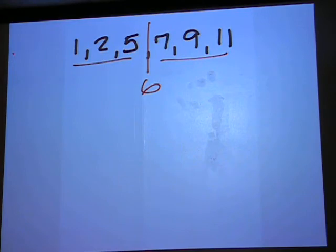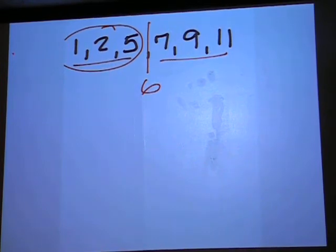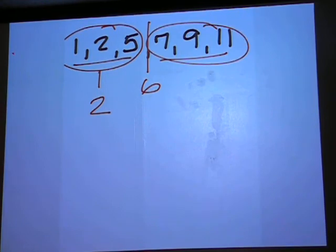you find the median of each half of the list of numbers. So on this side, we have 3 numbers. What is the middle number? 2. So we have a 2 there, and then on this side, 3 numbers. The middle number is 9.